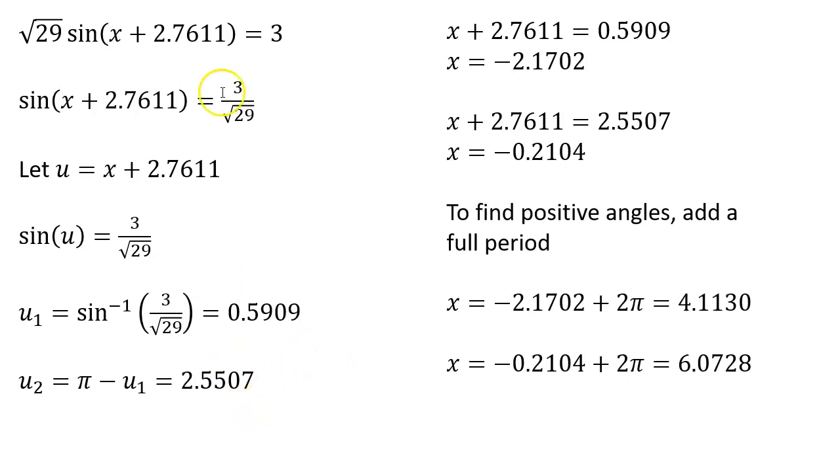Now we do want to be careful here. If this was not just sine x, if this was like sine 2x or sine 3x, we would have to adjust what we're adding here so that we're adding a full period. But since this is a plain old sine x, we can go ahead and add 2 pi to both of these solutions and come up with our two positive solutions.